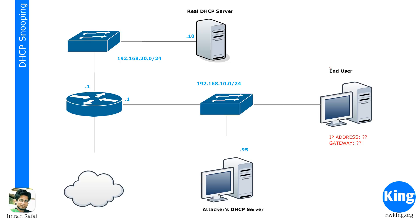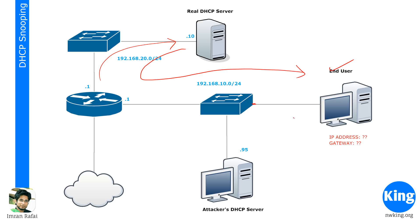In a typical scenario, an end user comes to the network. When it gets connected, it sends a discover message — a broadcast message sent onto the network. Everybody in the network listens to that. Typically, if there is a DHCP server in the network it would respond. But if there is no DHCP server and there is a DHCP relay, this router acts as a relay and forwards that to the DHCP server. The DHCP server would then send an offer with an IP address. Then this device would communicate with that server, and that server would acknowledge they have accepted that IP address. This is the normal process.